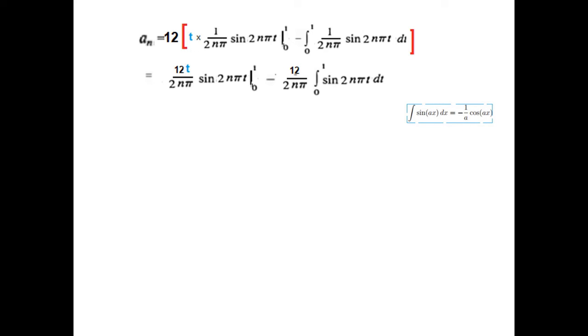Now, for integral of sine, we'll use this formula, minus 1 over a, cos ax. So, this, we're carrying as it is, here, 12 over 2nπ, and the integral of this will be 1 over 2nπ, cos 2nπt, by this formula.